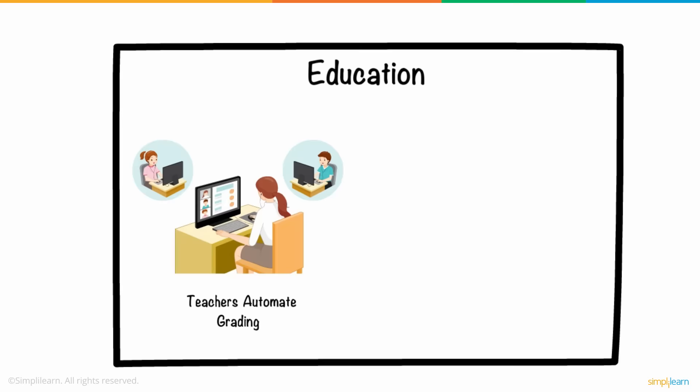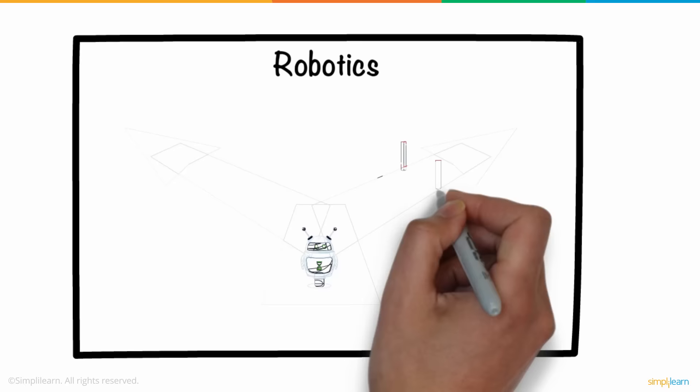In robotics, AI-powered robots employ real-time updates to detect obstructions in their path and instantaneously design their routes.